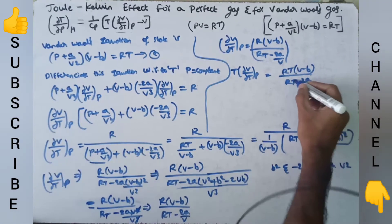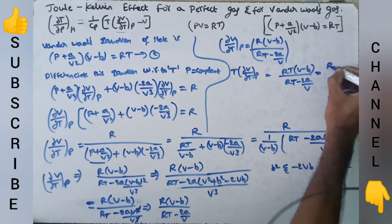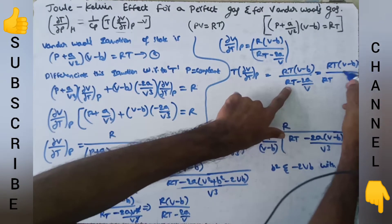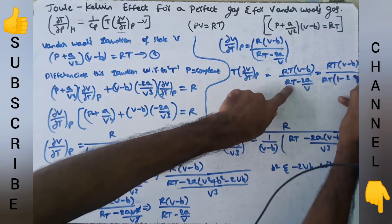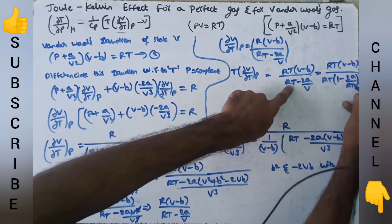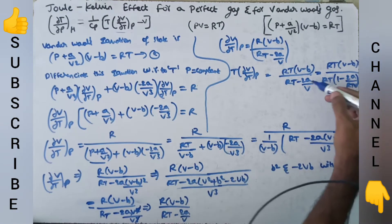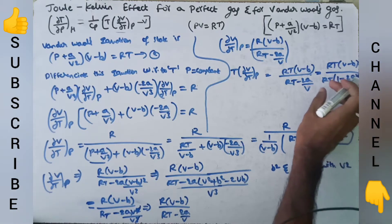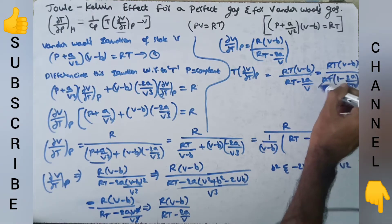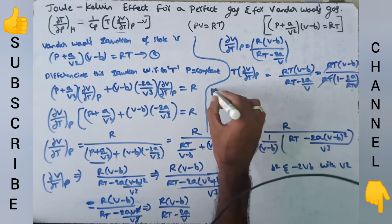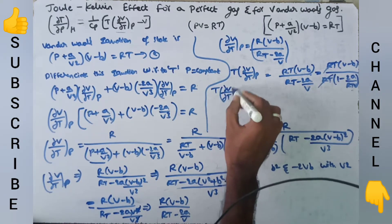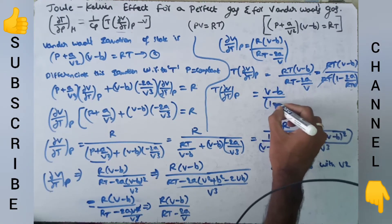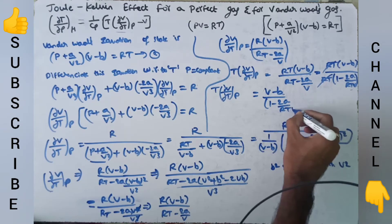From the denominator, we take RT as a common factor. So this term becomes 1 - 2A/(RTV). We have taken RT common; there is no RT term left in the numerator standalone, so RT cancels, and we get T·(∂V/∂T) at constant P = (V - B) / [1 - 2A/(RTV)].